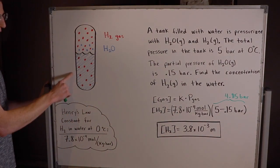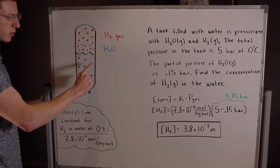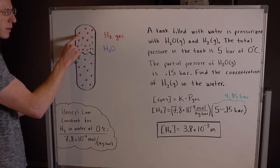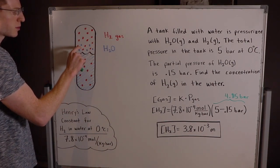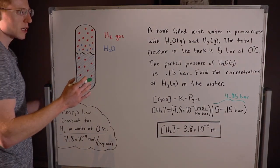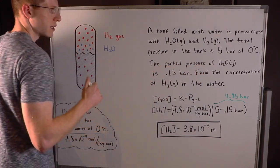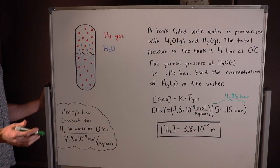So this is my tank here and you can see the water level is right here. It goes up to here and I shaded in the water with blue and the red dots represent H2 gas molecules while the blue dots represent H2O gas molecules. So remember the pressure in the tank overall is 5 bar but the partial pressure of H2O in the tank is only 0.15 bar.